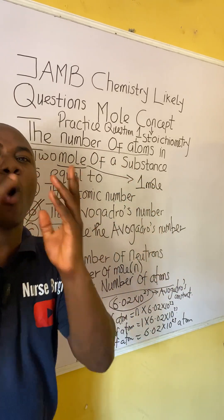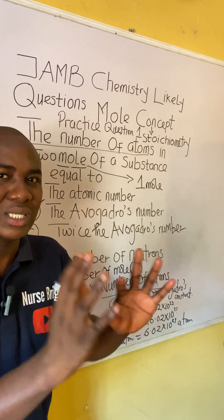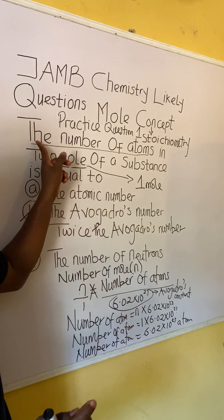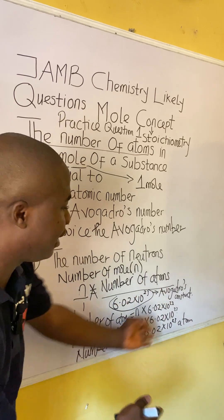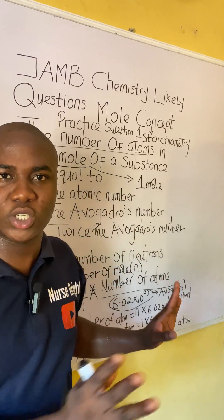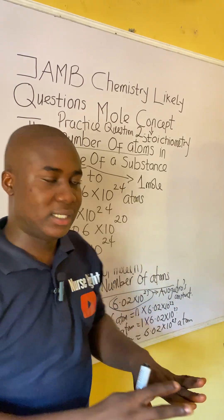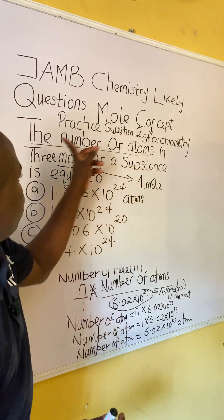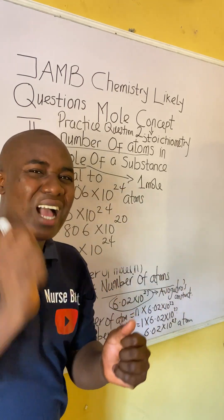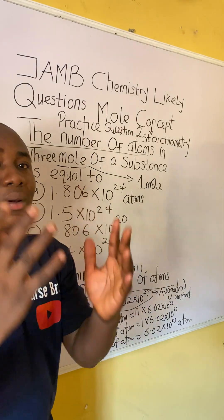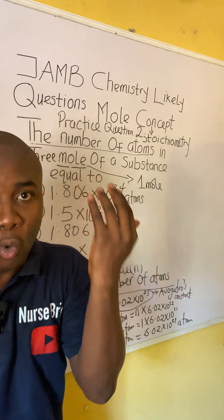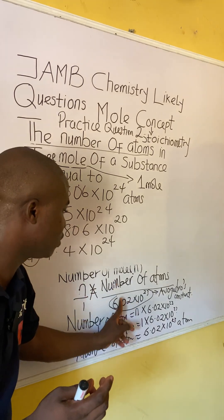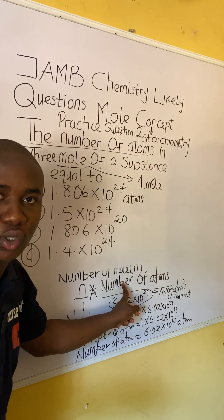Don't get confused — it's simple. It is now 2 moles, so what becomes your number of atoms relating to your Avogadro's constant? Use the formula for number of moles that relates to number of atoms, make number of atoms the subject, and get your answer. Here is the second practice question: the number of atoms in 3 moles of a substance is equal to what? They are still asking for number of atoms, so use the formula — number of moles equals number of atoms divided by Avogadro's constant — make number of atoms the subject and get your answer.